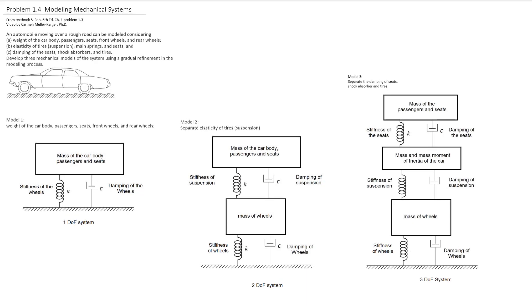We can model the system even more elaborately by separating the mass of the passenger and the seat, and considering the stiffness and the damping of the seat. Then we have the mass and the mass moment of inertia of the car, the stiffness and the damping of the suspension, the mass of the wheels, and the stiffness and damping of the wheels. Since we have considered three different sets of mass and three different groups of stiffness and damping, we have a three-degree-of-freedom system.